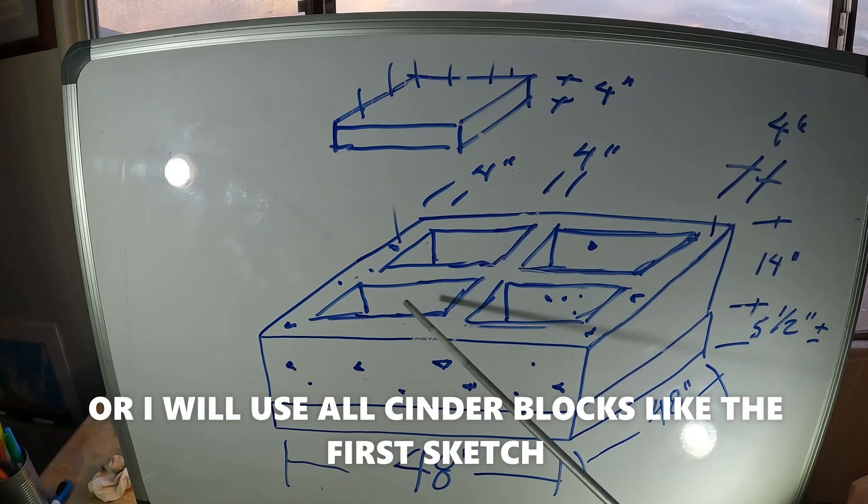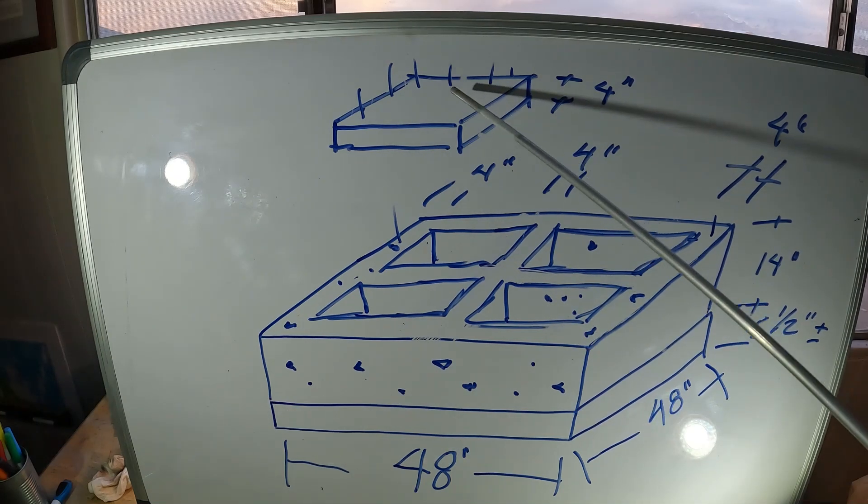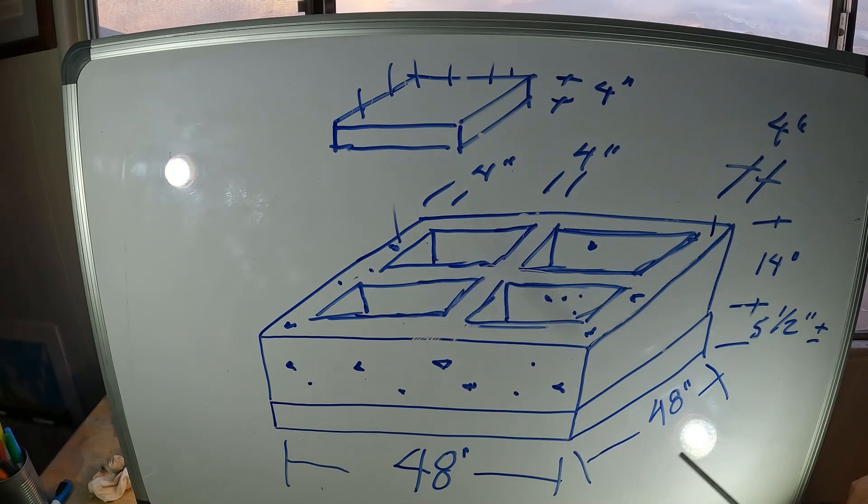And these cavities will be filled with insulation. Then I'm going to pour these four 24-inch square slabs. So this is a 48-inch square system I'm building.